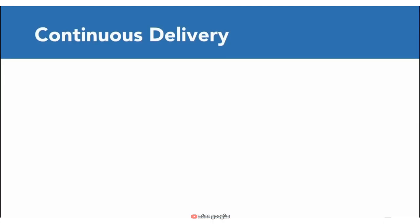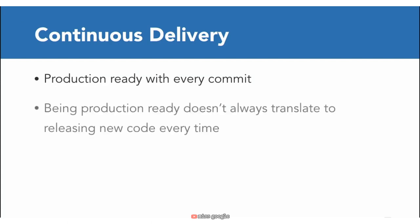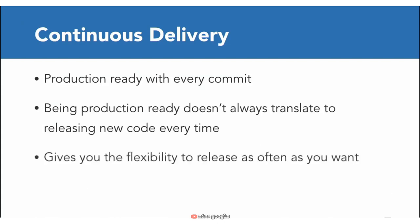Continuous delivery is the next logical step from continuous integration. What this means is if your tests are being run constantly with every commit, then it's possible to release or push your project to production at any point. It's worth mentioning that continuous delivery doesn't always mean that you are actually releasing your code to production with every commit — it just means that with every commit that passes, your changes are production ready. It's more of the philosophy and commitment that you're always in a production-ready state. You can decide to release multiple times a day, daily, weekly, or whatever best suits your requirements.